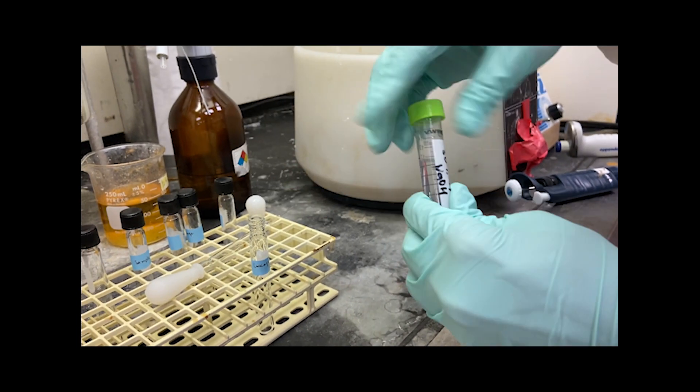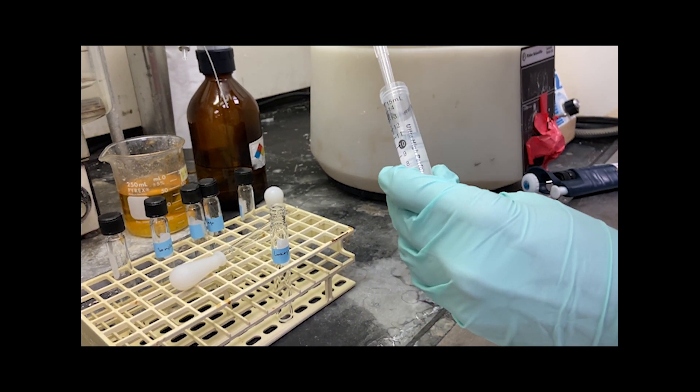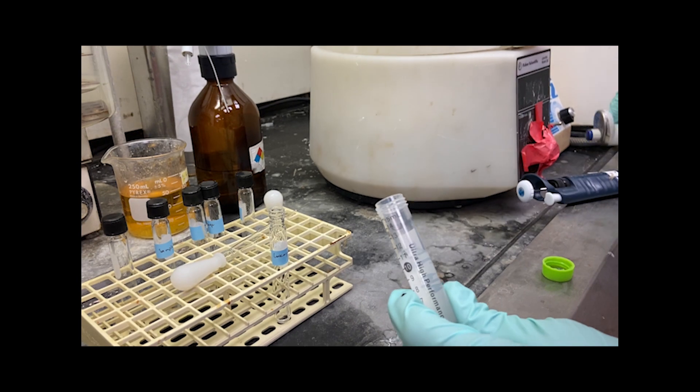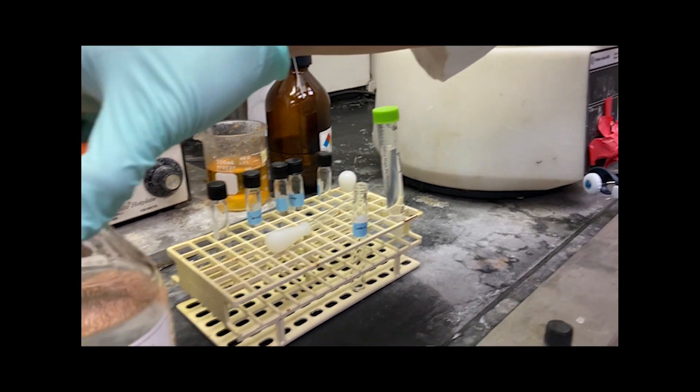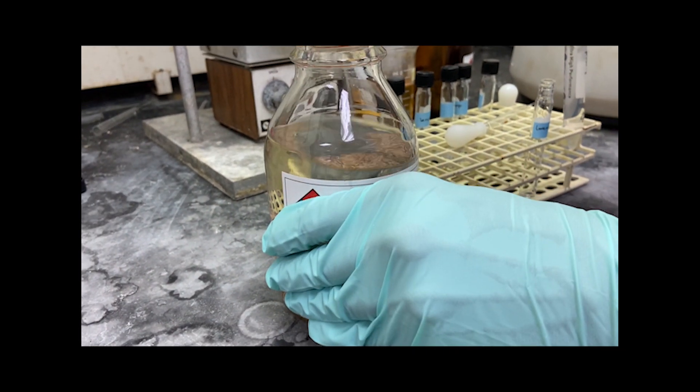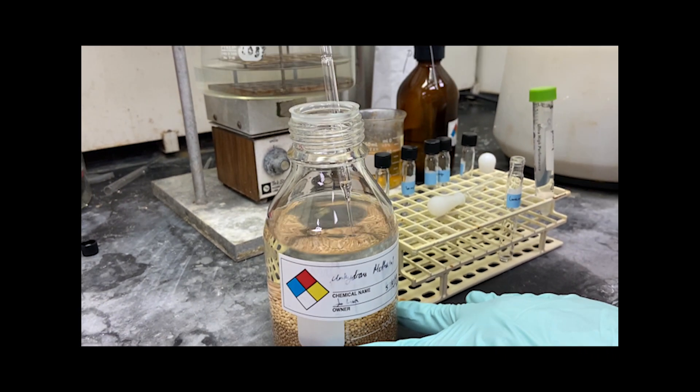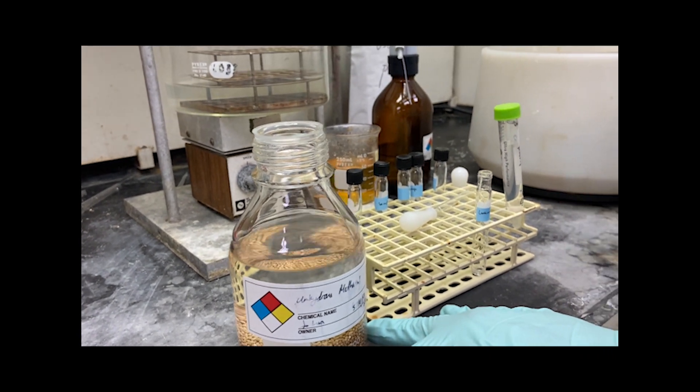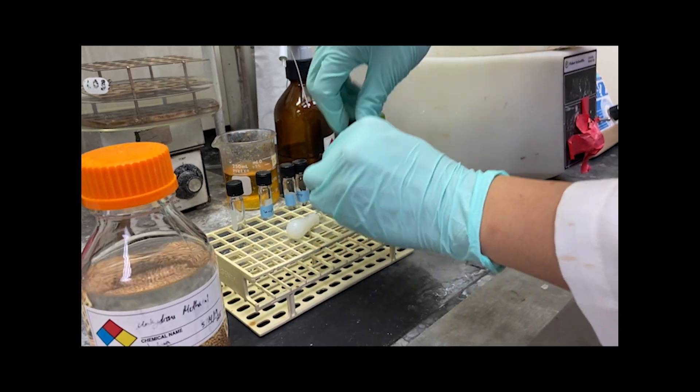For the first step of this experiment, we will start by demonstrating the preparation of the base. First, we take 100 microliters of 50% weight by weight sodium hydroxide and add 200 microliters of methanol and vortex for 3 to 5 seconds.